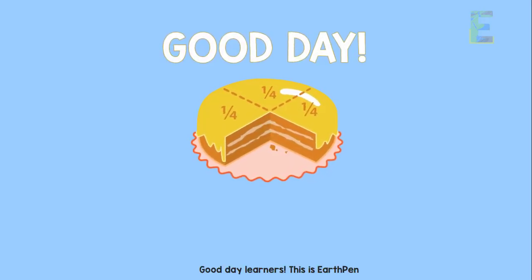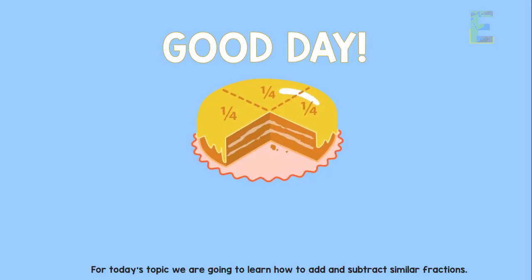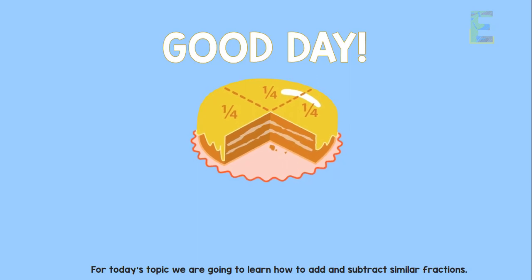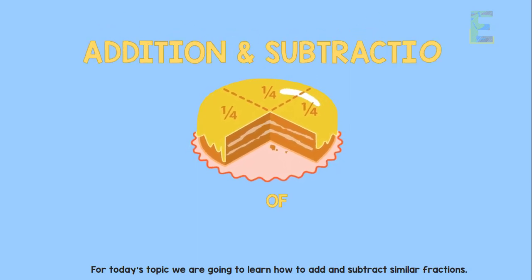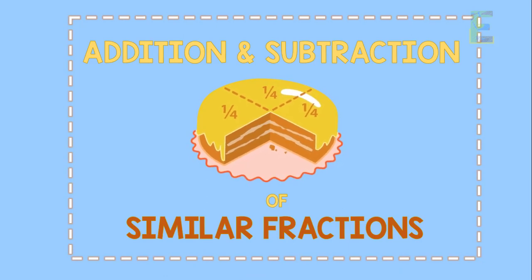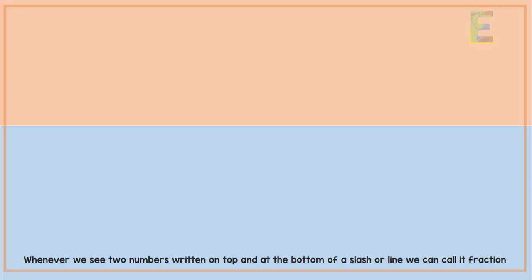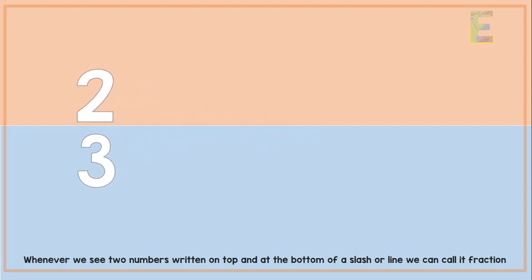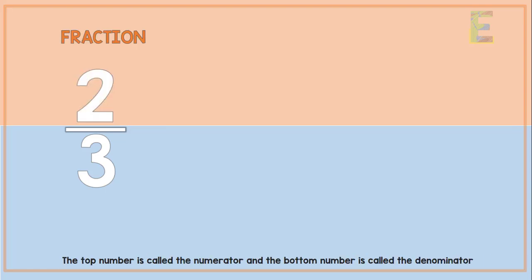Good day learners, this is Earth Pen. For today's topic we are going to learn how to add and subtract similar fractions. Whenever we see two numbers written on top and at the bottom of a slash or line, we can call it a fraction. The top number is called the numerator and the bottom number is called the denominator.